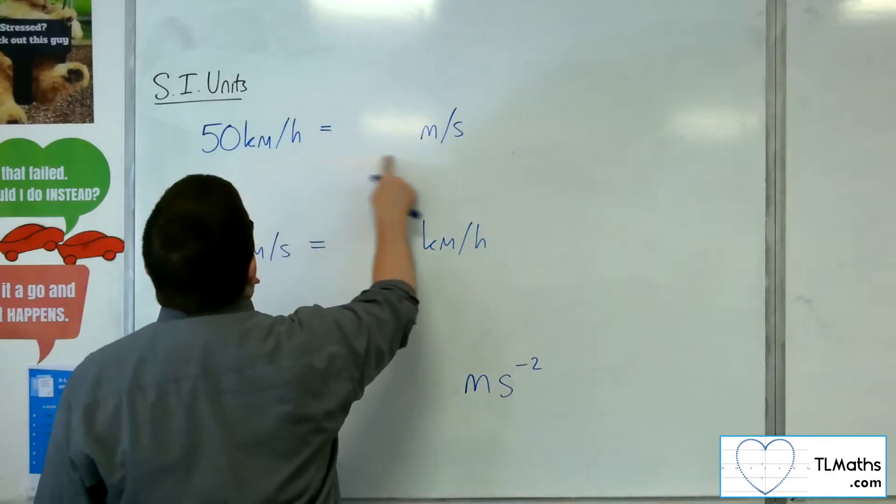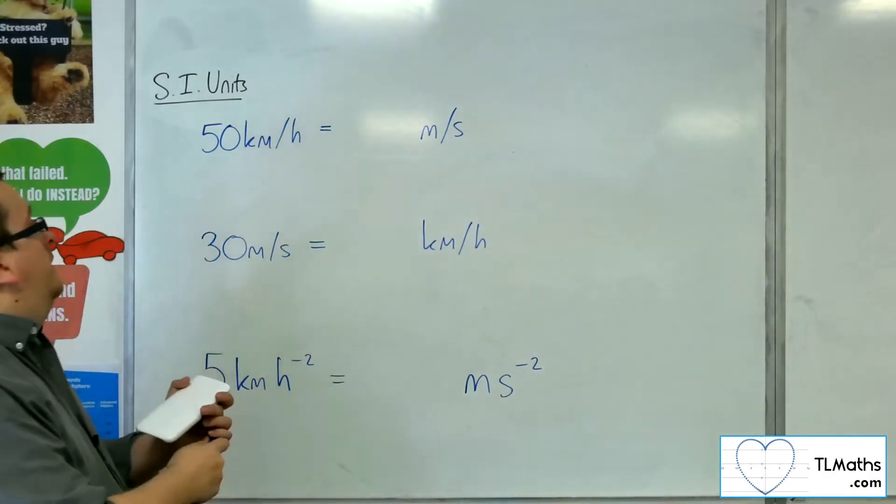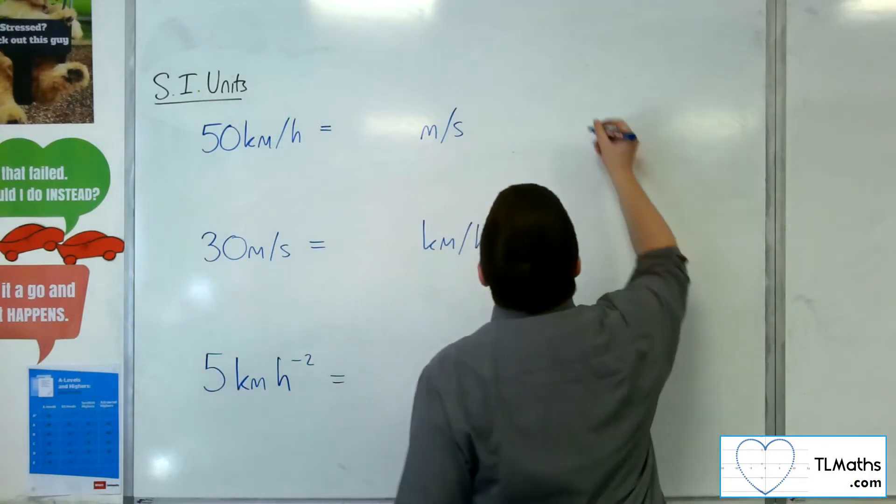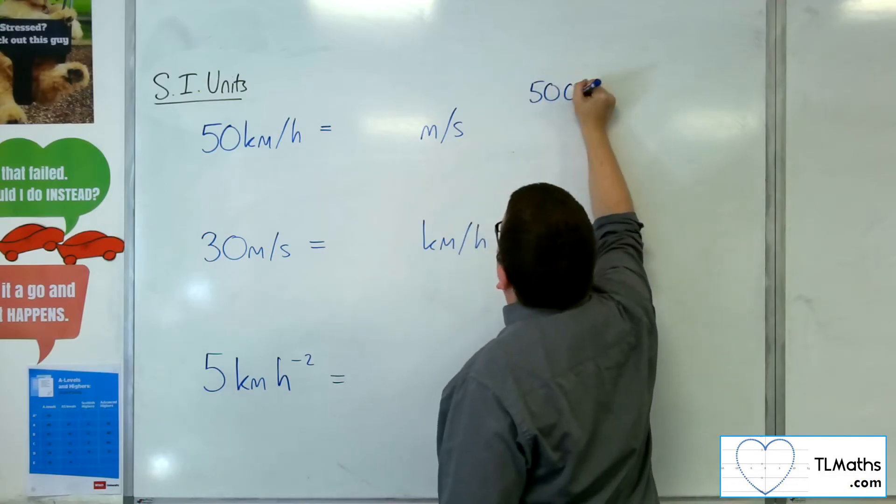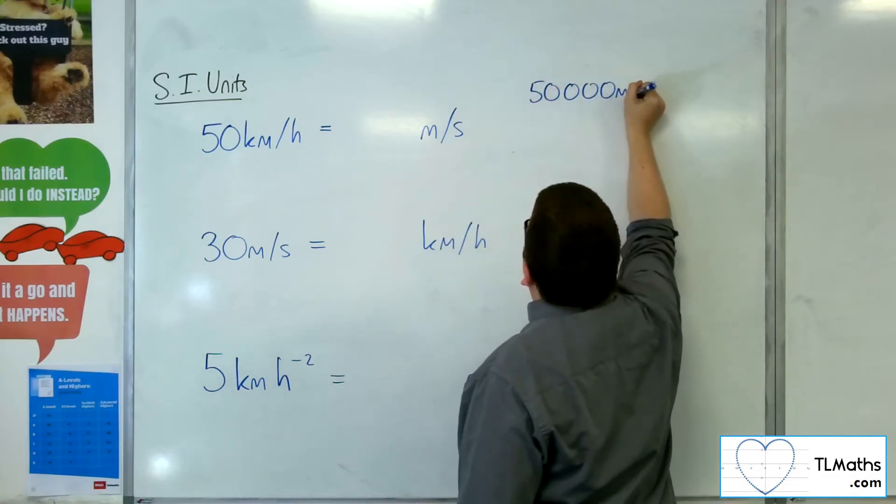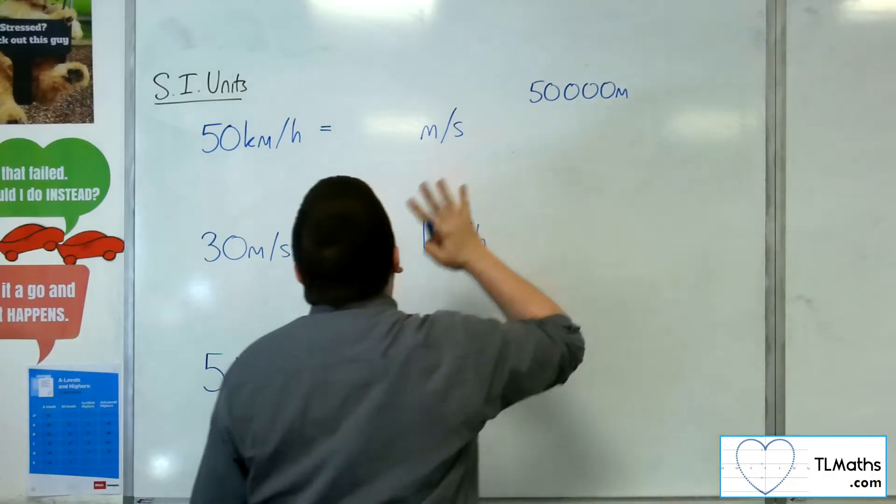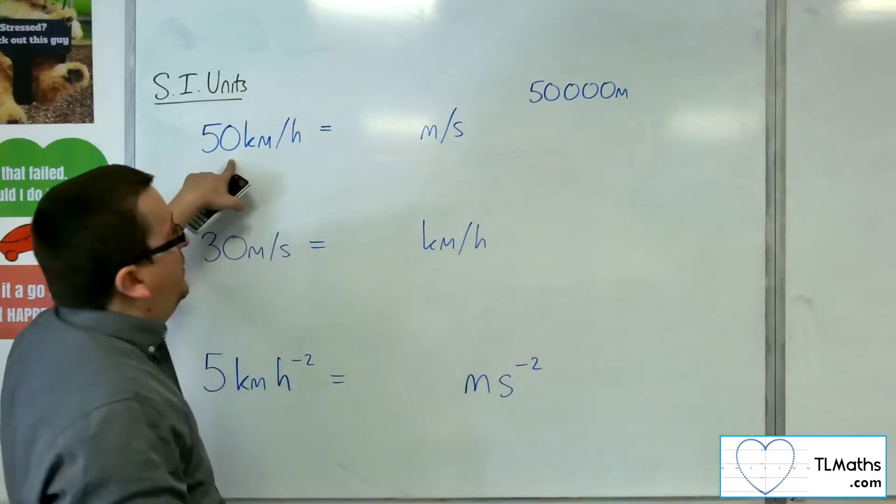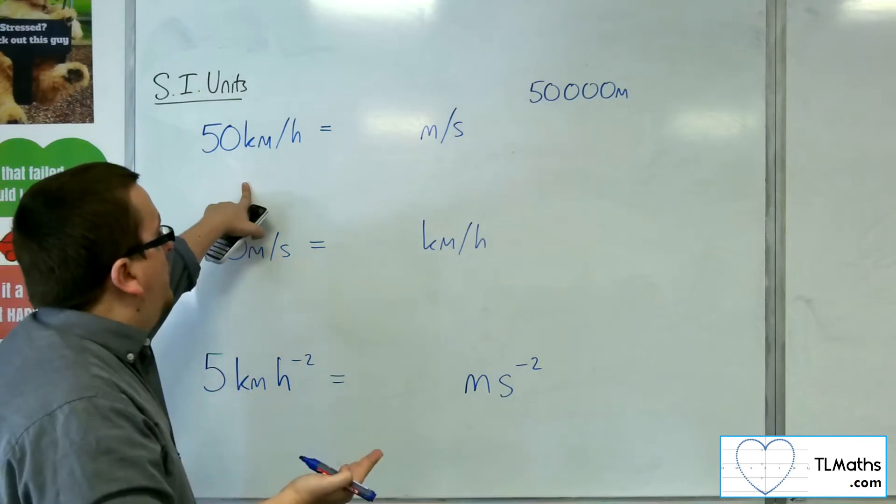So first of all, 50 kilometres per hour to metres per second. What you need to understand is that 50 kilometres is 50,000 metres. So what we want to do is convert 50 kilometres into 50,000 metres first, so times by 1,000.